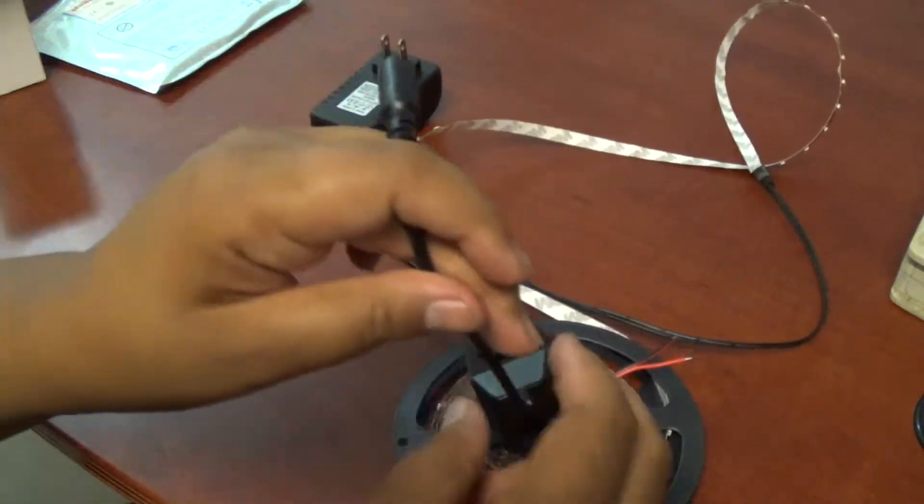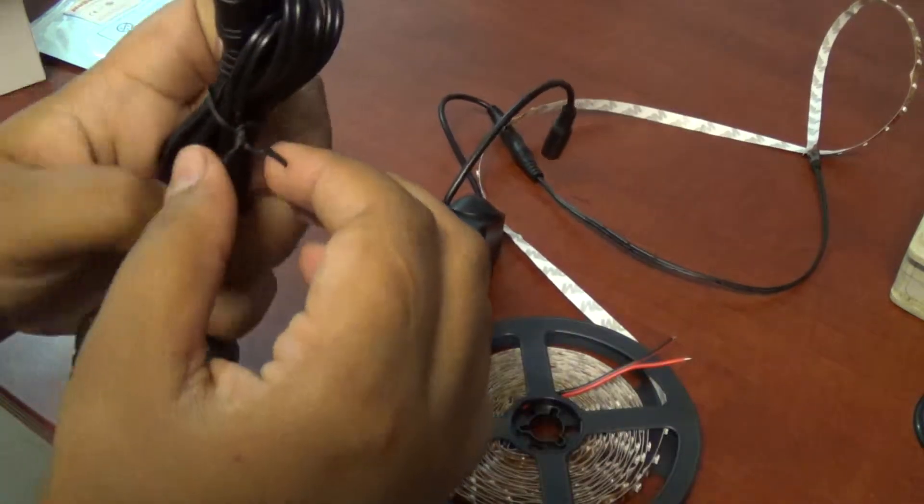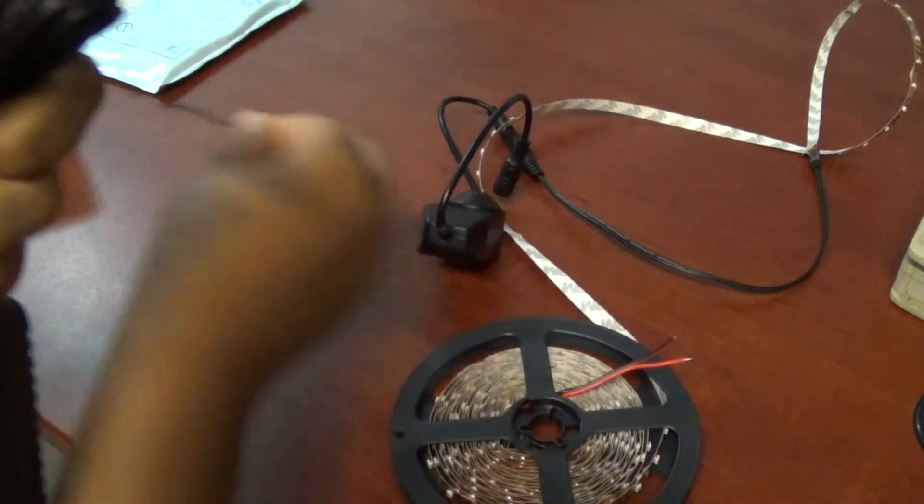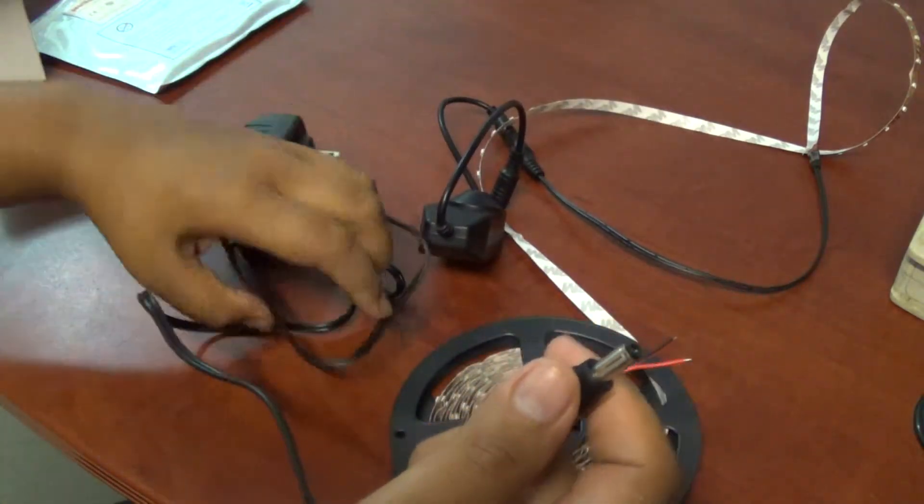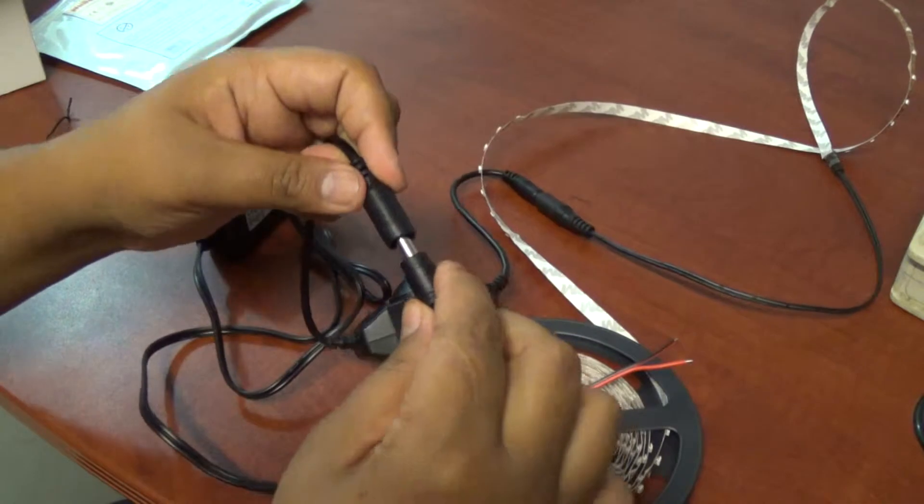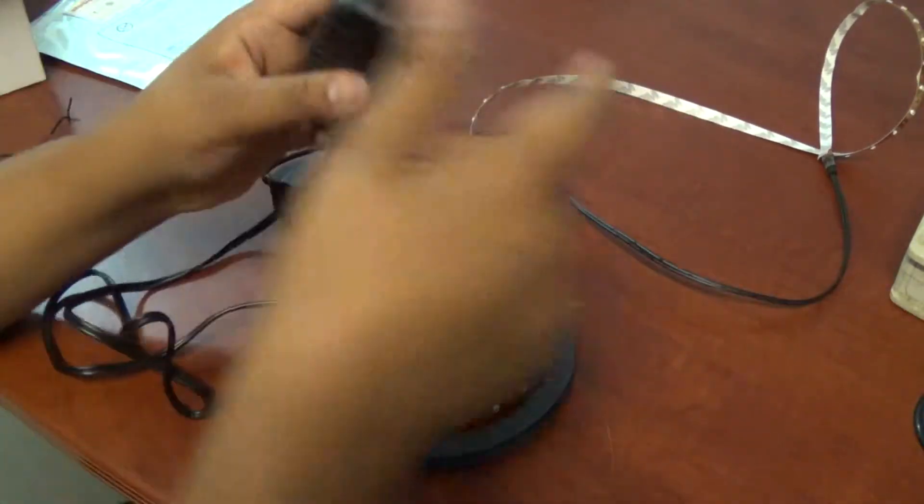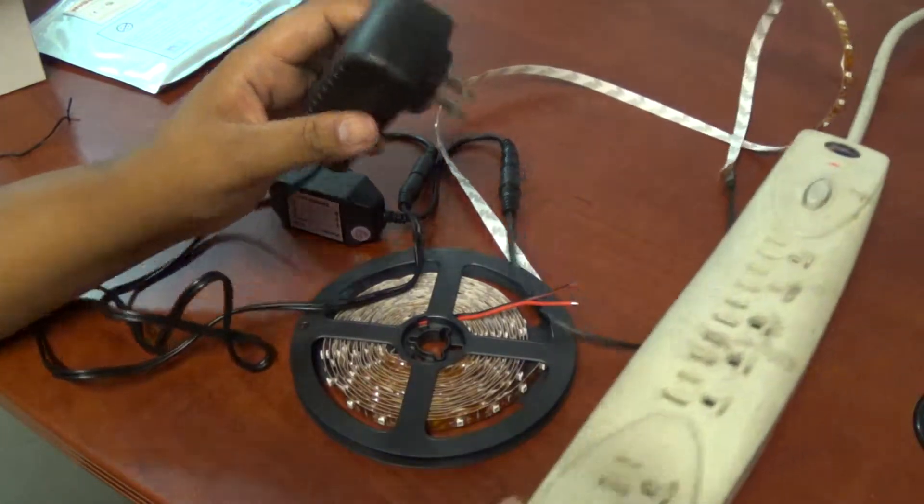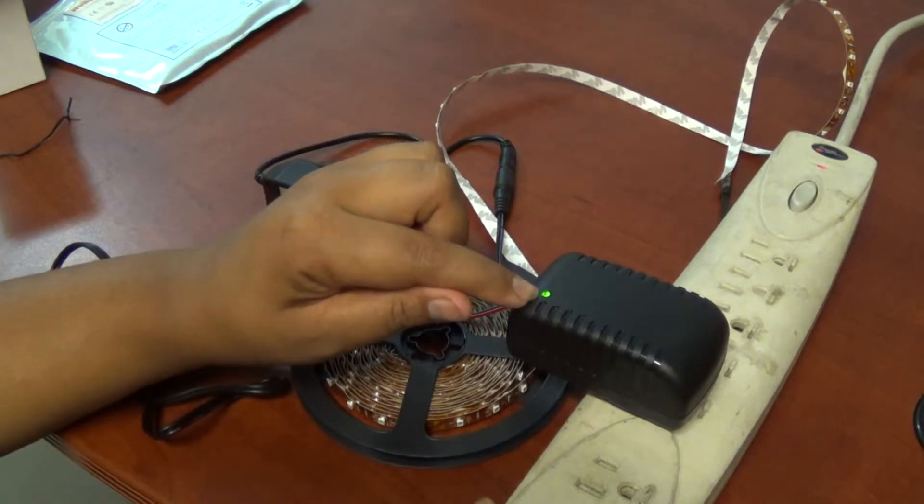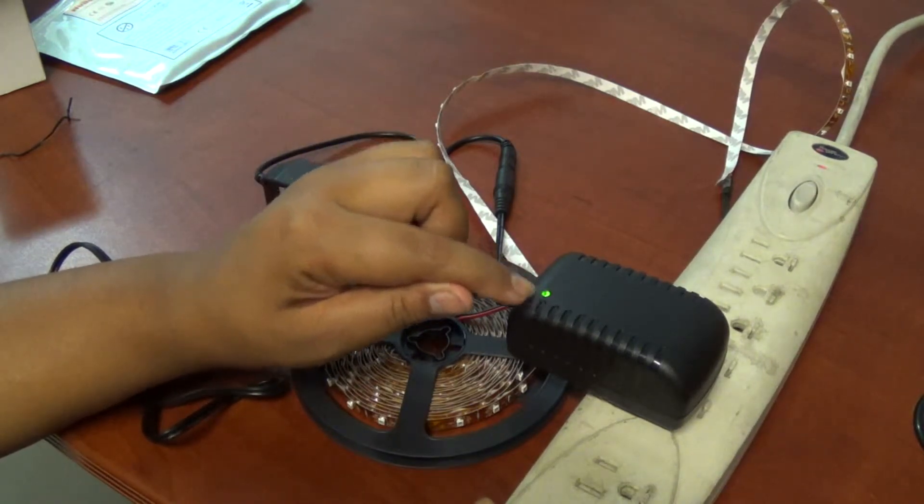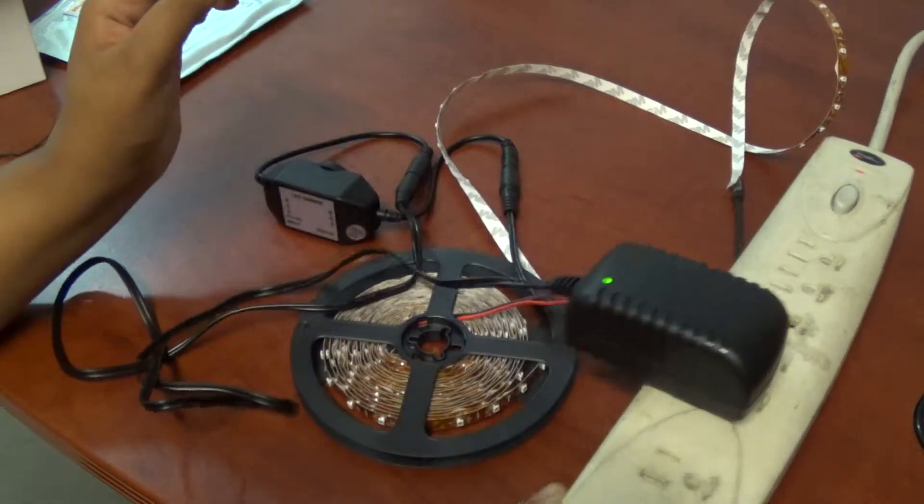Now we're going to connect your dimmer, the other end of your dimmer, to your LED power supply, just like this. Connect it to an extension cord we have here. As you can see, this light is on. That light indicates that your power is working correctly. It should always be on when you have it connected to the power.